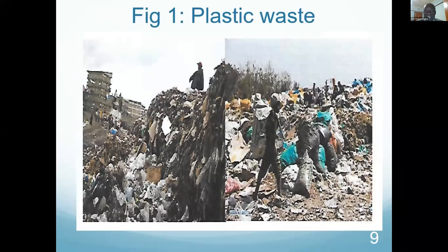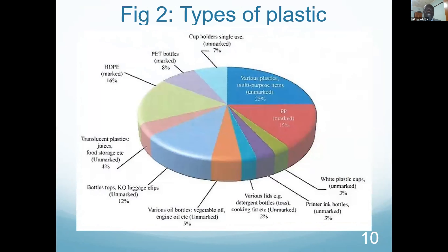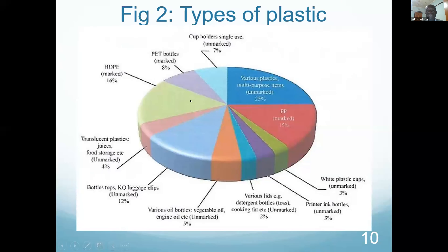That image shows a plastic waste site somewhere in Nairobi — you can see buildings in the background, so it is very close to a residential area. The distribution of plastics from the waste shows we have high-density polyethylene, PET, PP, and unmarked plastics — some of which came from Kenya Airways. High-density polyethylene, PET, PP, and the unmarked ones make up the bulk of the plastic mix.